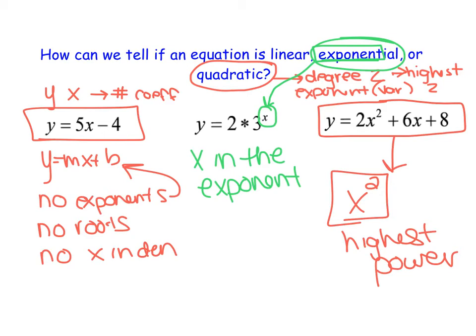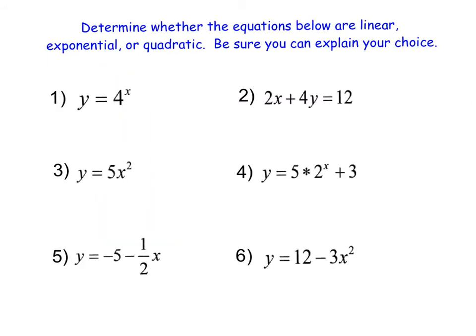So when you have a quadratic, you're going to have this x squared up here, and it's going to be the highest power for a variable. When you have an exponential, you're going to have x up here in the exponent. And when you have a linear graph, you're just going to have x's, y's, and their coefficient values. So for each equation below, we're going to decide which type of function we have, and then explain our choice.